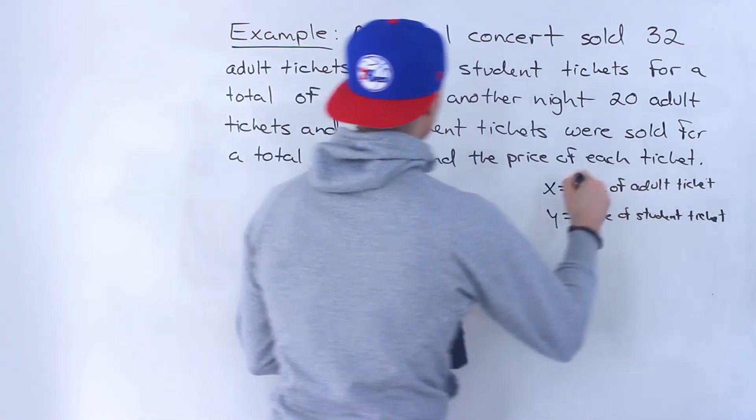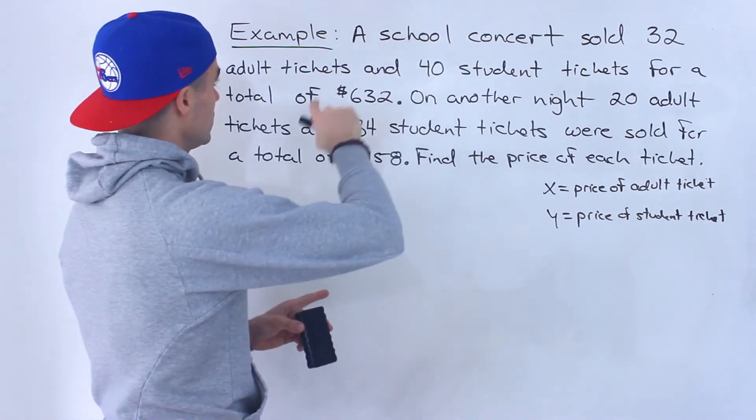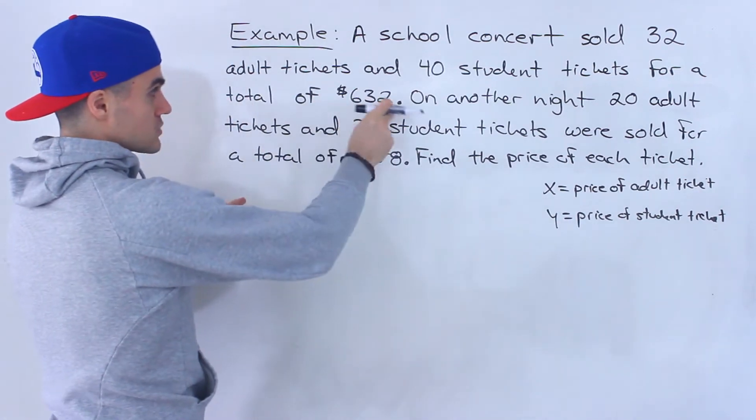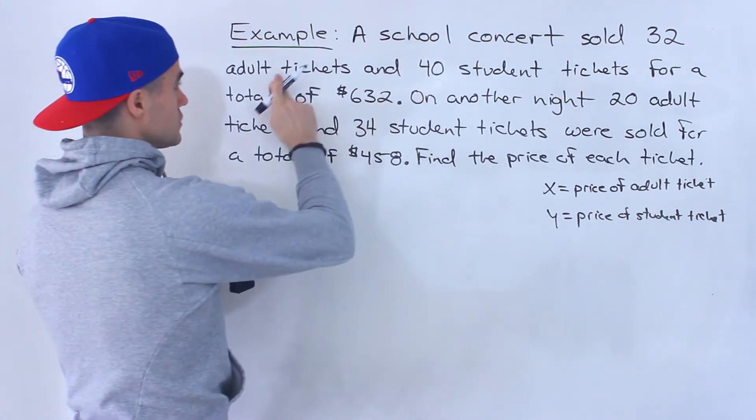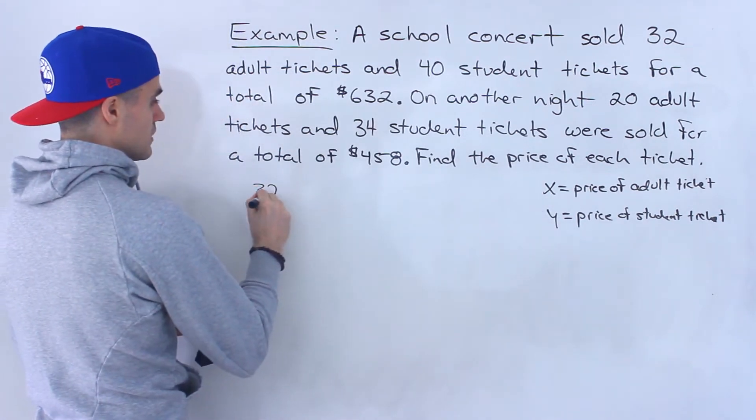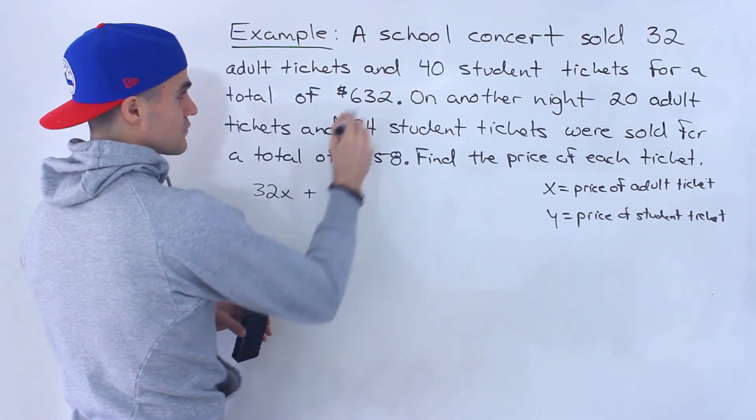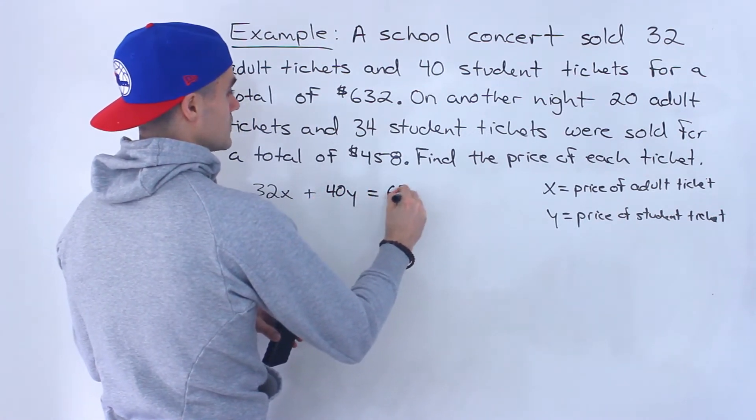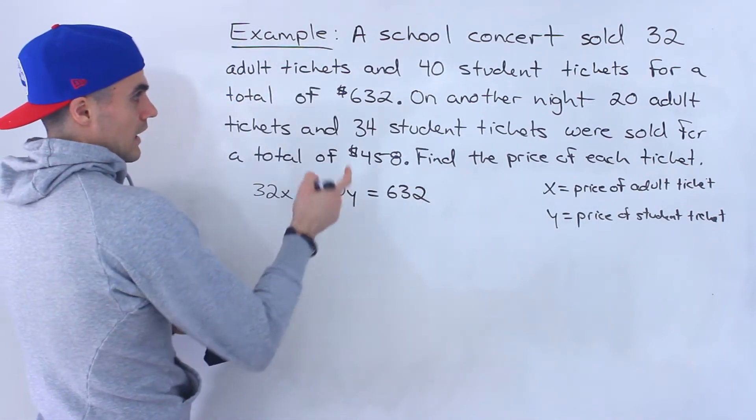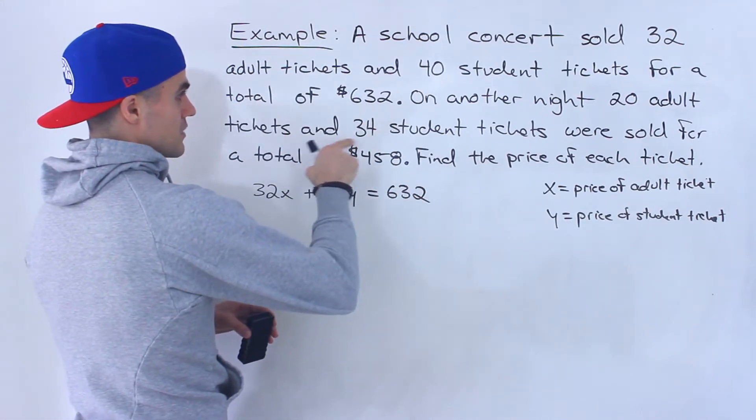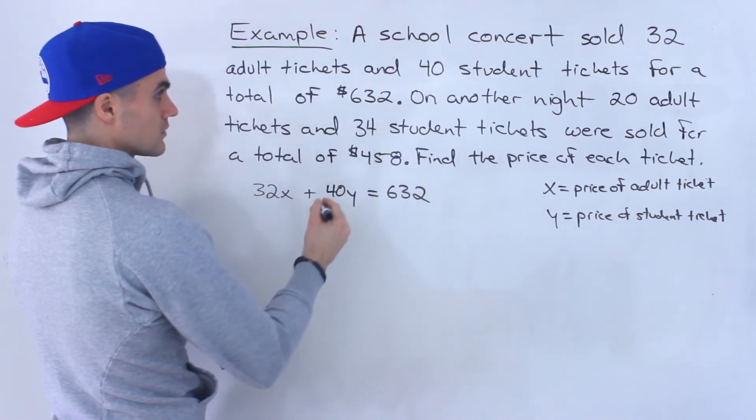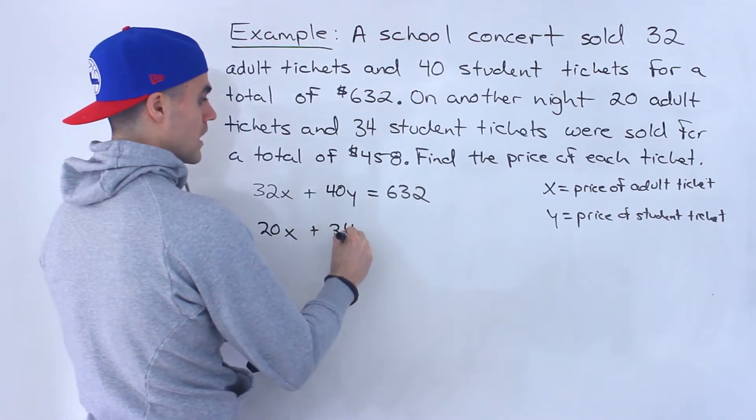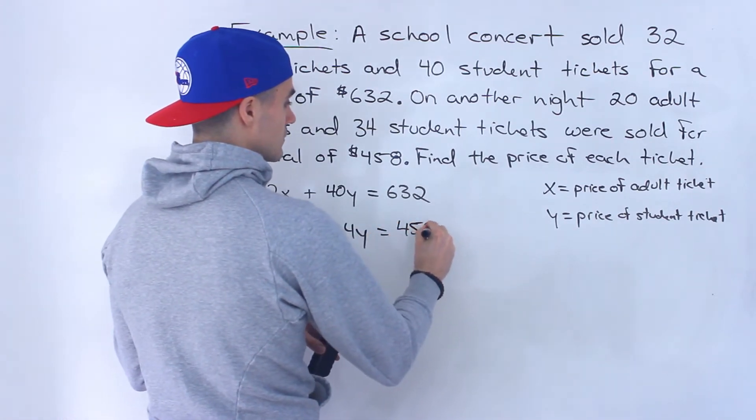Notice that with these new variables, we can create equations with the information. So 32 adult tickets and 40 student tickets when those amount of tickets are sold, we get a revenue of $632. So 32 adult tickets times the price of each adult ticket, 32X, plus 40 times Y equals $632. And then on another night, 20 adult tickets and 34 student tickets were sold for $458. So we'll have 20X plus 34Y equals 458.